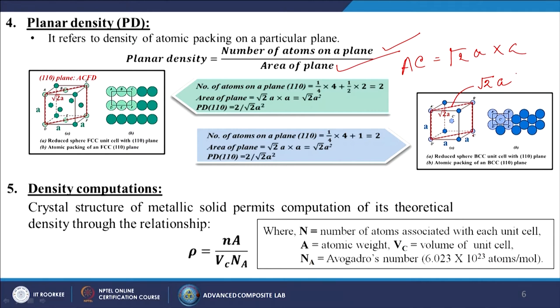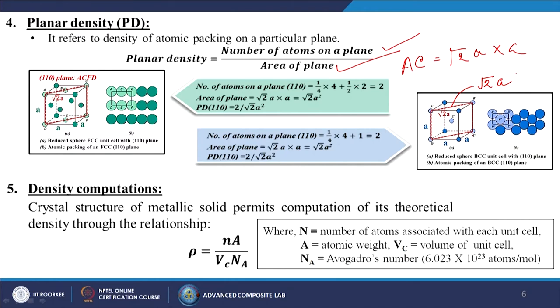For density computations, the crystal structure of a metallic solid permits computation of its theoretical density through the relationship: ρ = (N·A)/(Vc·Nₐ), where N is the number of atoms per unit cell, A is the atomic weight, Vc is the volume of the unit cell, and Nₐ is Avogadro's number (6.023 × 10²³ atoms per mole).